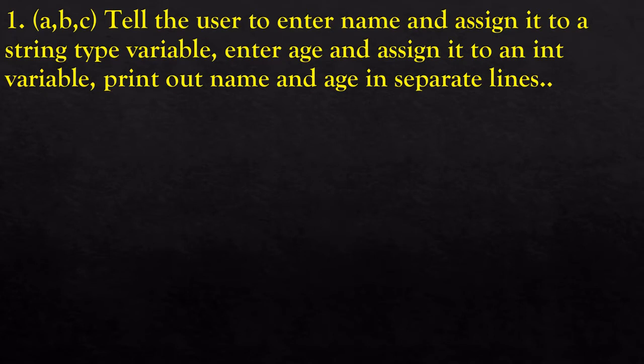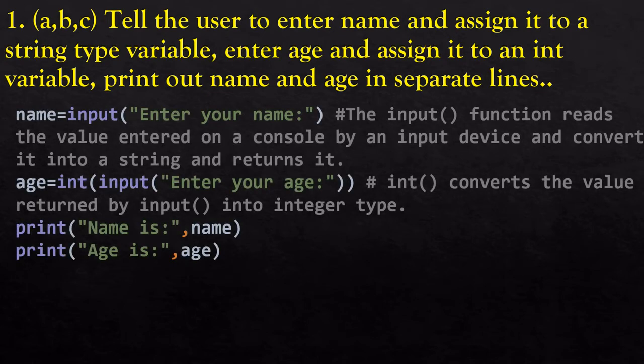Question number one is to ask the user to enter the name and assign it to a string type variable, then enter age and assign it to an integer variable and print the name and age in separate lines. Here, name is a variable where you call the input function. Within the input function you can write 'enter your name'. The input function is used to read a value entered on the console by some input device like a keyboard, convert it into a string, and return it.